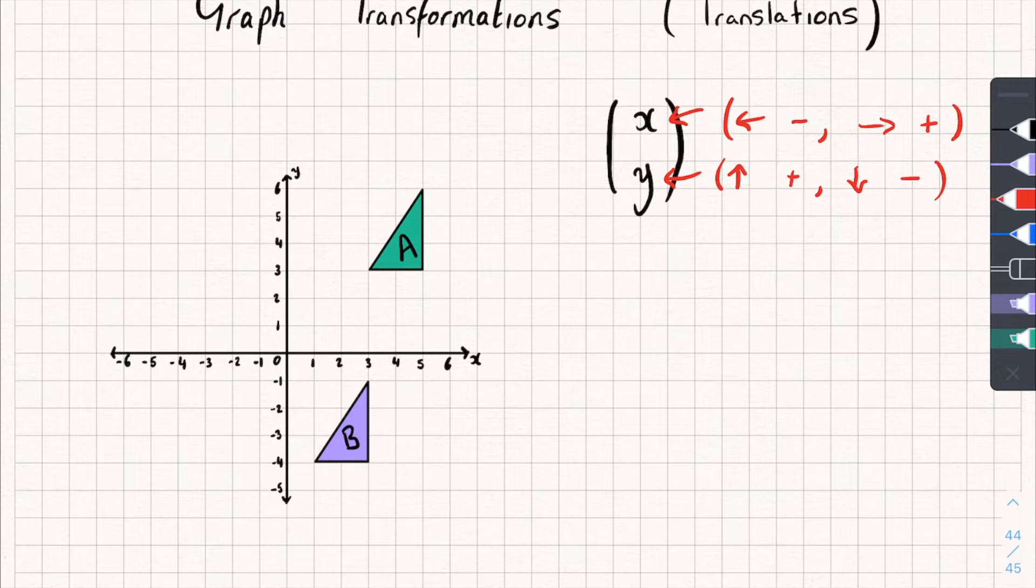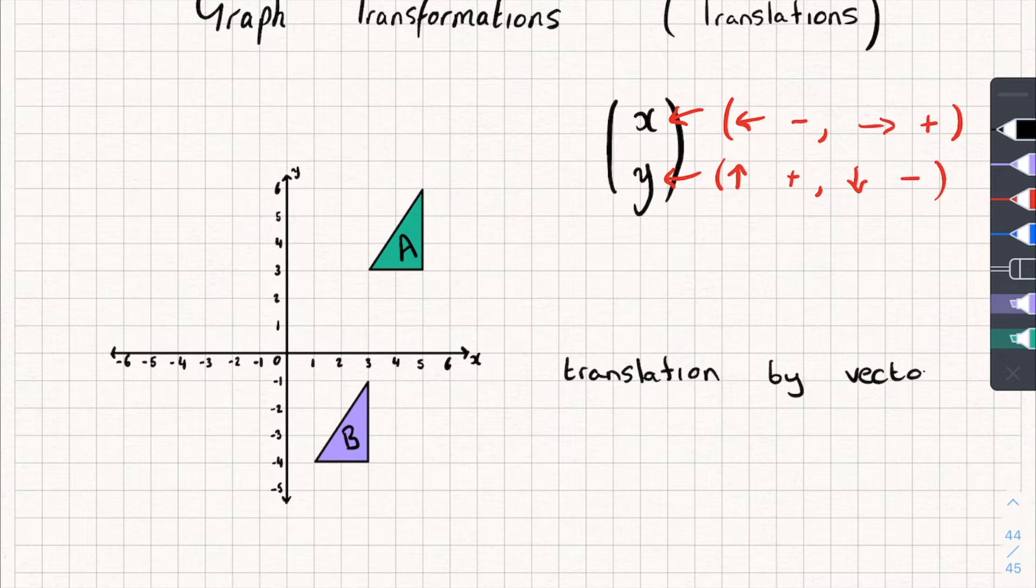So we might be asked, describe the transformation that takes you from shape A, which is this one, to shape B, which is this one. So we can do that quite easily. We first have to say, well, it's a translation. That's important that we describe the type of transformation. So we say translation by the vector, and now we have to describe it. And here's how I would do it.